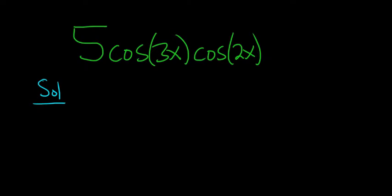So the formula we're going to use is cosine x cosine y equals one half bracket, cosine of x plus y plus cosine of x minus y.